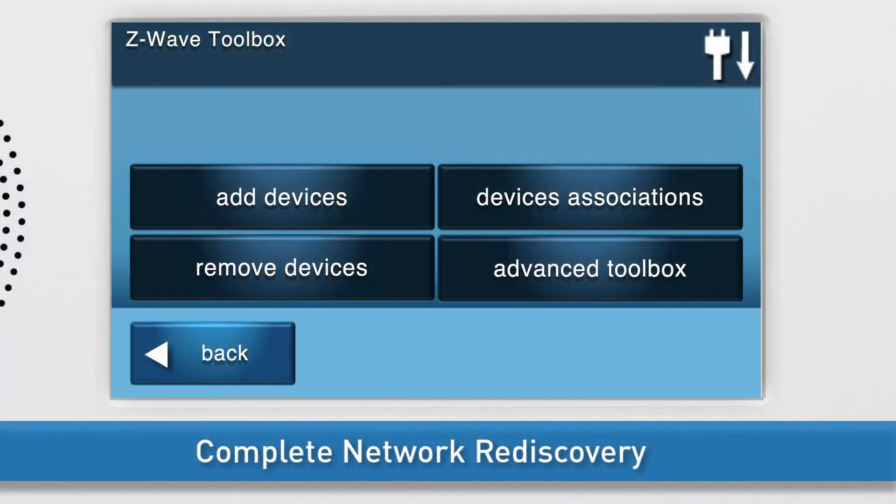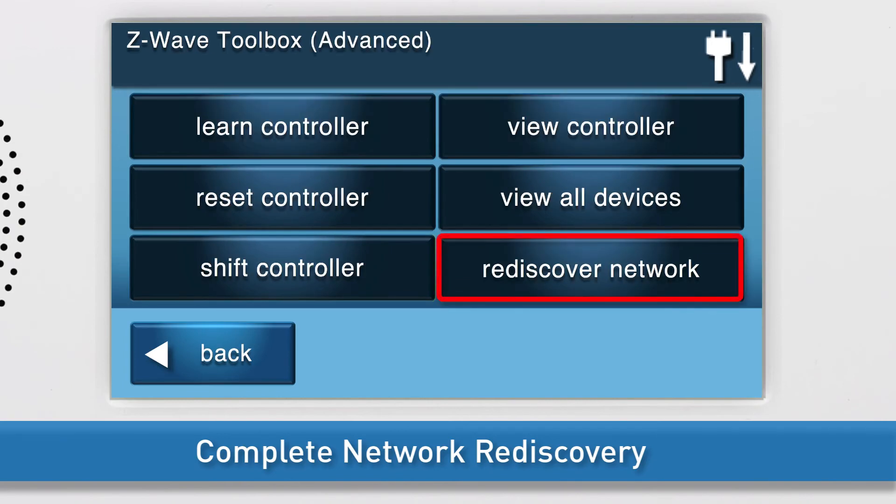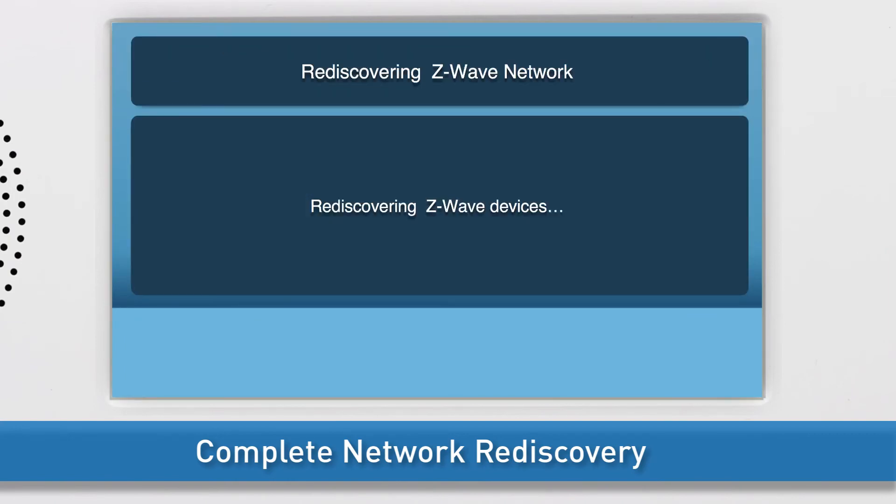To initiate a Network Rediscovery, navigate to the Z-Wave Toolbox, then press Advanced Toolbox. Press Rediscover Network. The panel will display a message that it is rediscovering the Z-Wave devices.